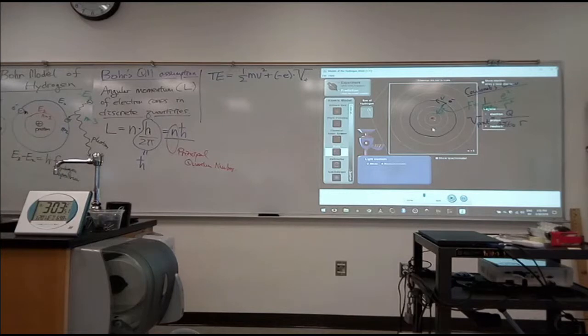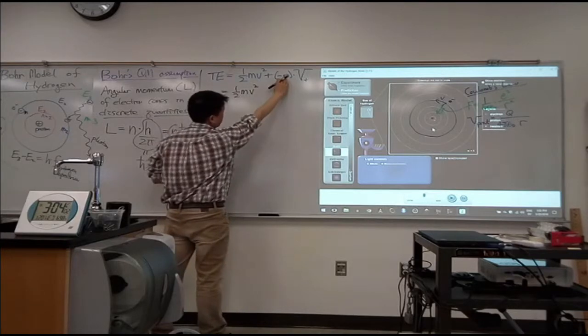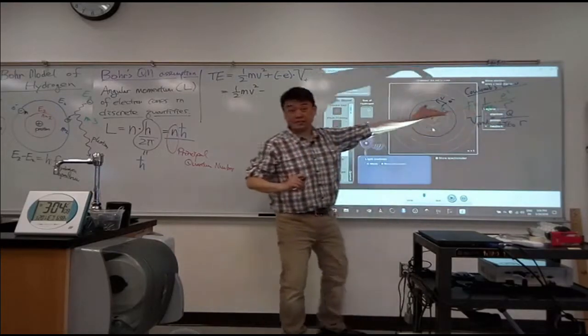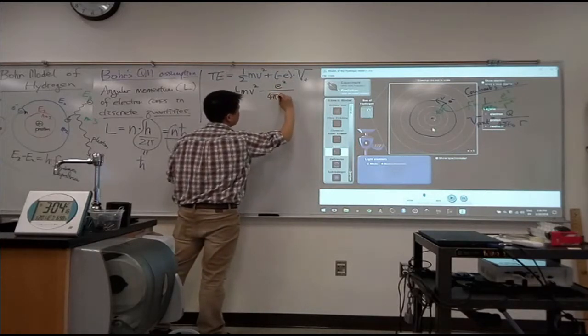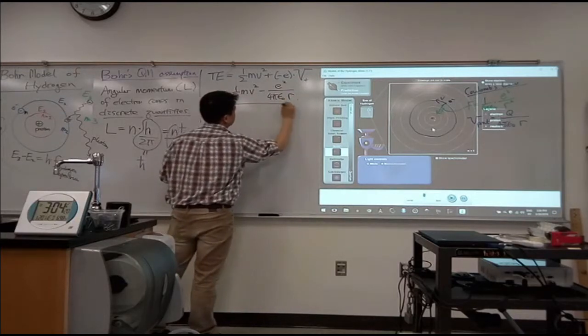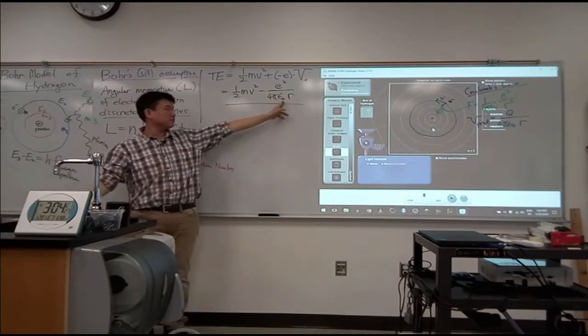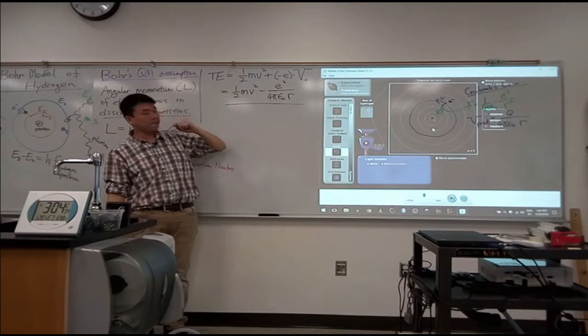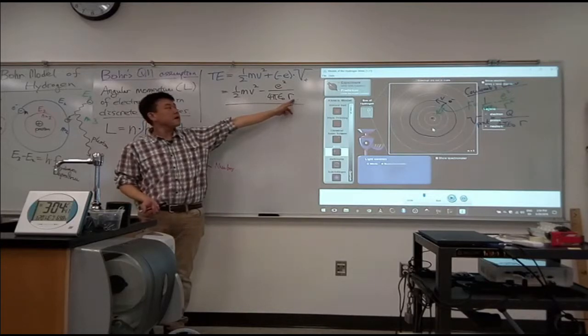And the potential energy of this electron would be the amount of charge minus E times the potential due to the positive charge at the center. Okay, let me write all that out. So this is the expression for the energy. Total energy is equal to 1 half mv squared minus the elementary charge in the electron times the, this Q also should be E for the proton. So minus E squared over 4 pi epsilon naught r.